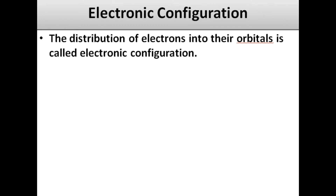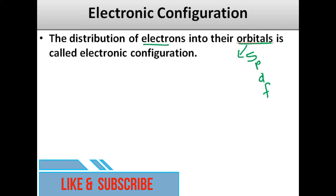Bismillah ar-Rahman ar-Rahim. Dear viewers, today we will discuss one of the most important topics known as electronic configuration. Electronic configuration kaise ki jaati hai, electronic configuration kya hoti hai — we will discuss it. Electronic configuration is the method of distribution of electrons into the orbitals. We have different orbitals like s, p, d, f. Ab unmein electron ko kaise divide kiya jata hai, kaise usmein rakha jata hai — that process is called electronic configuration. If you have not watched my previous lecture related to orbitals, the link is given above where you can watch the difference between orbit, orbitals, shell, subshell, energy levels and sub-energy levels.